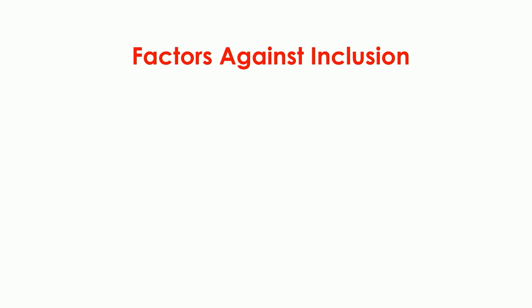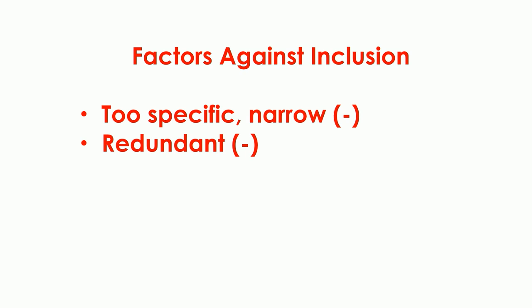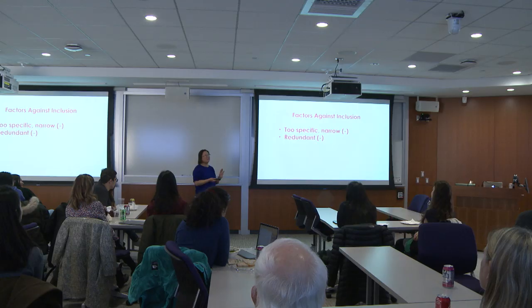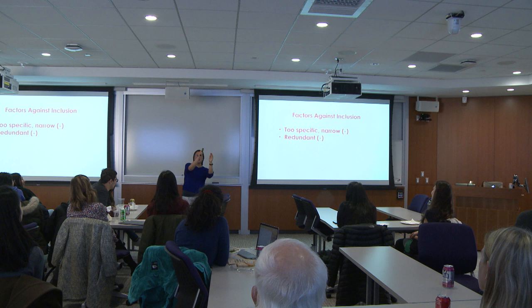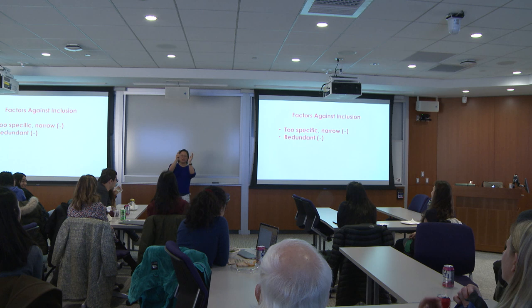Factors against emoji inclusion are: too specific or too narrow — like a very specific kind of dog versus dogs in general. Also redundant — for example, a turkey company wanted a roast turkey but we already had a live turkey. We decided both can mean Thanksgiving, so you don't need two forms of turkey, cooked and not cooked. Interestingly we do have two forms of chicken — we actually have the whole life cycle: the egg, the chick, the full chicken, and the cooked chicken.